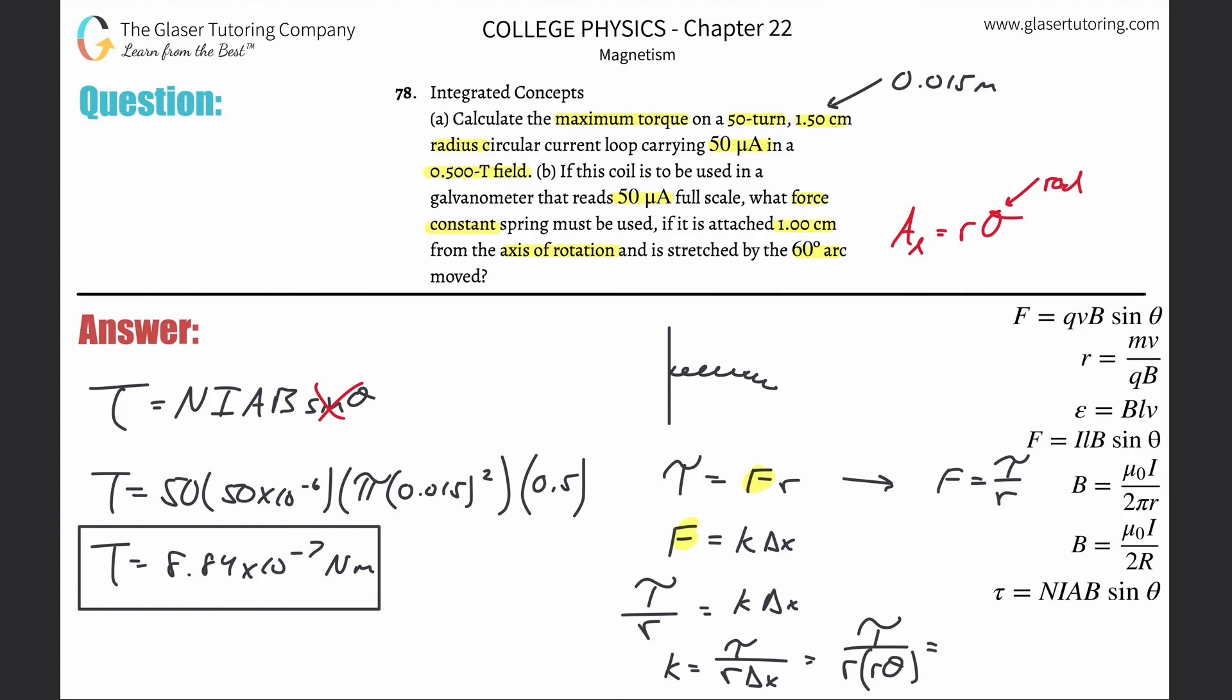We're going to take the torque value and divide it by the radius, 0.01 meters times 0.01 meters (you could just square it), multiplied by 60 degrees but we need that in radians. You have to remember the conversion: 60 degrees...